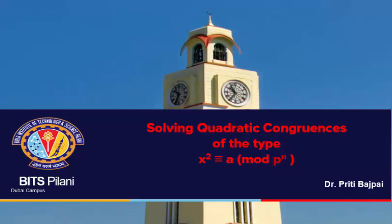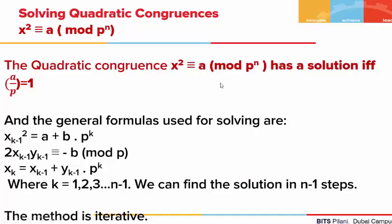Hi everyone. Today we are going to see how quadratic congruences of the type x² ≡ a mod pⁿ are solved. But before we begin solving, we need to check whether such congruences are solvable or not. To do that, we find the value of the Legendre symbol (a/p). If the value of the Legendre symbol is 1, the quadratic congruence is solvable; otherwise it is not.